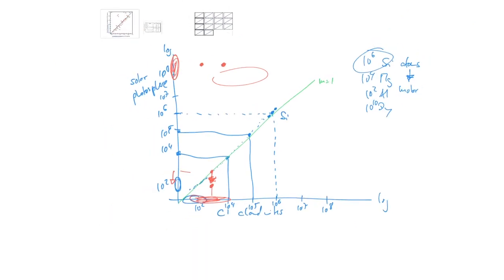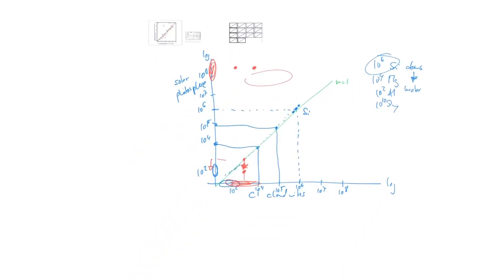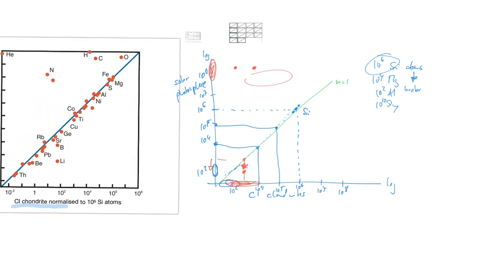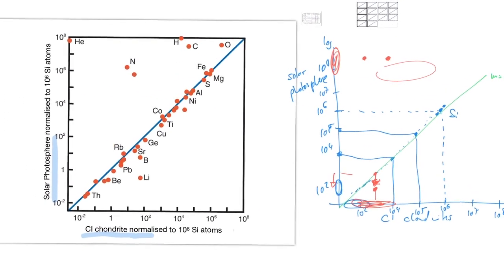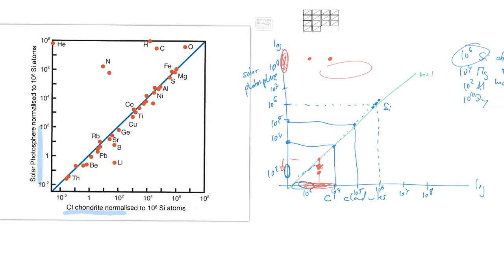So this is how this plot is constructed and how it works. On the axes we have CI chondrites versus solar composition, and there's a slope-1 line on which all the elements plot, except for volatile-type elements typical in the sun — and lithium is below the line because it's consumed in the sun.